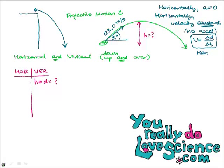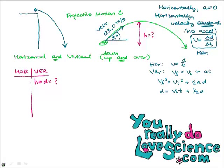Notice that the 23.0 meters per second is the initial velocity. The problem is you can't use the 23.0 meters per second in any equations directly. Horizontally we have v = d/t, and for our vertical equations we have: VF = VI + at; VF² = VI² + 2ad; and d = VI·t + ½at². These three are your vertical equations.